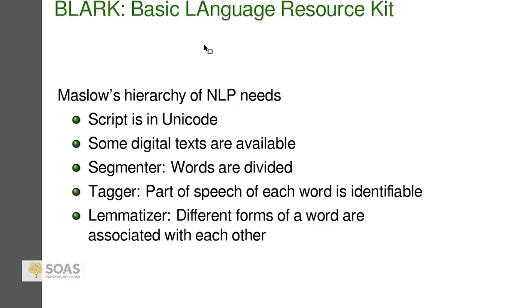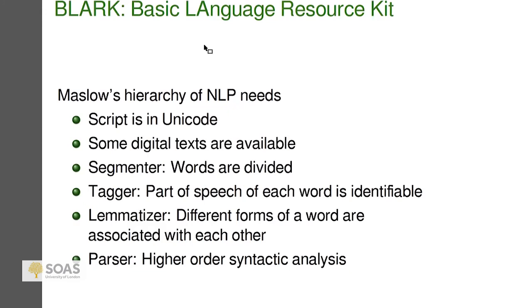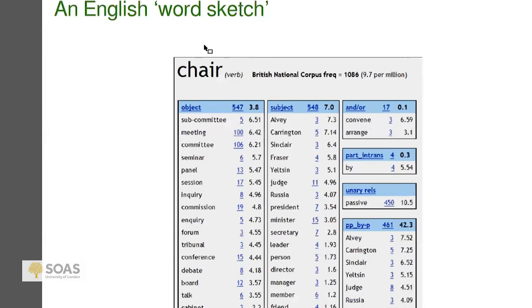Once you have words, you can analyze them and identify part-of-speech categories. After POS tagging comes lemmatization — for instance, 'sang' is a past tense verb, and at the lemmatizer level it identifies it as the same word as 'sing' even though sing is present tense. Then once you have that level, you can start doing syntax: noun phrase chunking or dependency relationships between verbs and nouns.